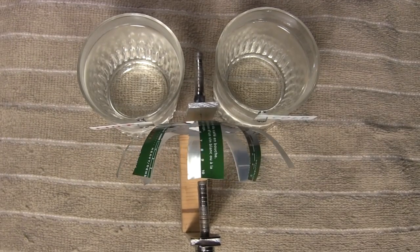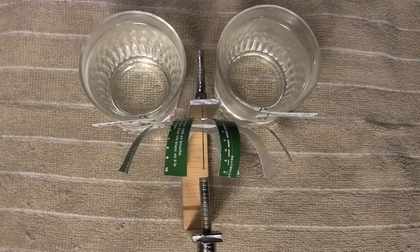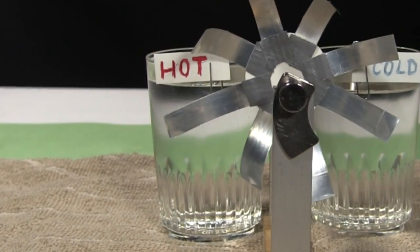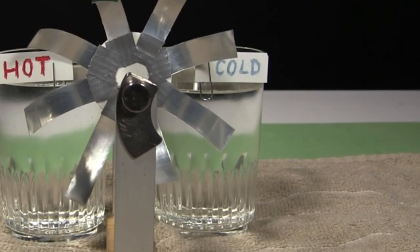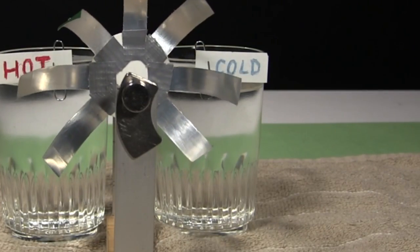The petals of the rotating part are strips cut from the coffee bag. Behind it on one side is a glass of hot water, meaning the air around it is hot, and on the other side is a glass of cold water with cold air surrounding it.